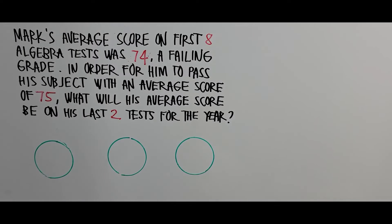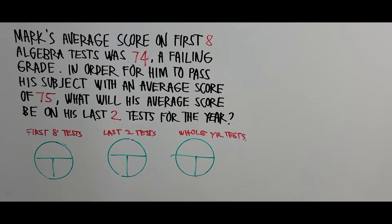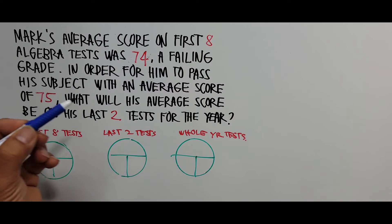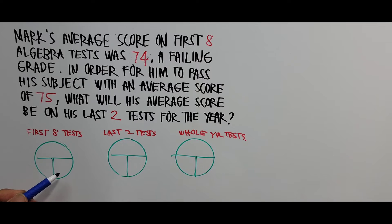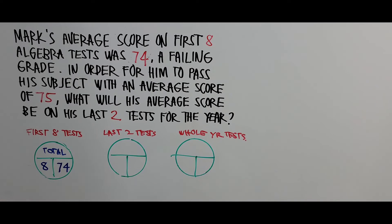We have indicated those three average pies and now we put the contents on each pie. For the first eight tests, the average score was 74 — we write 74 in the bottom-right of that pie. The number of tests is eight, written in the bottom-left. The top portion indicates the total — the total scores for all eight tests, which we still need to find.